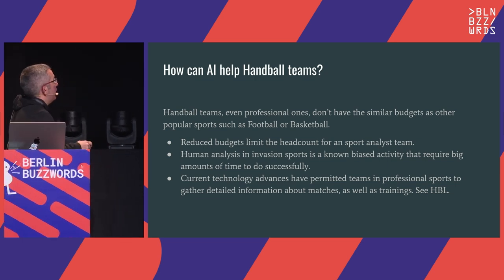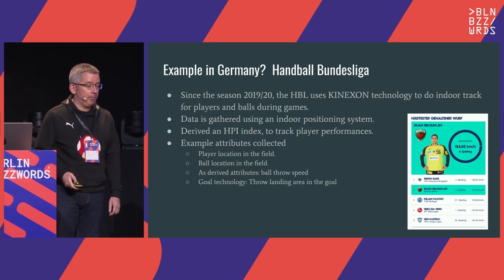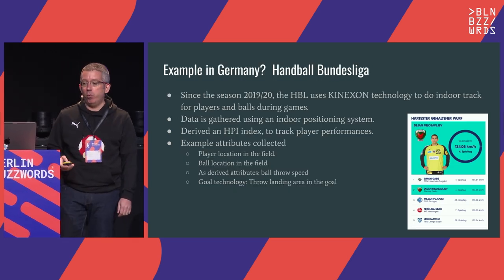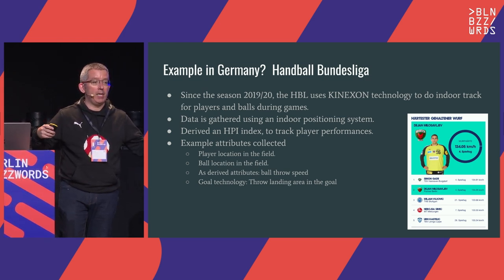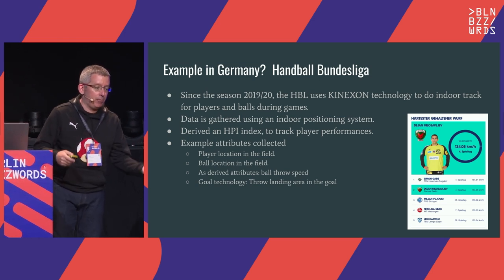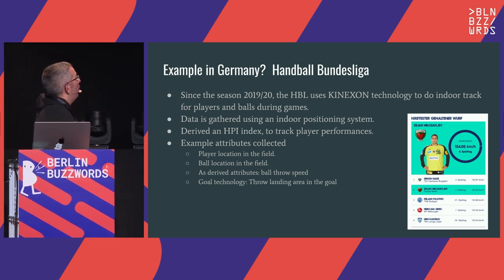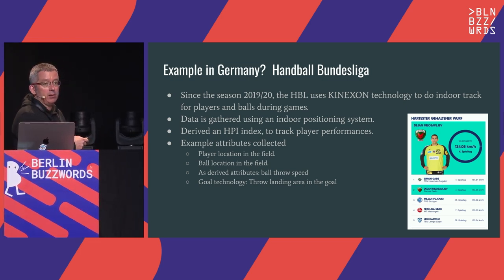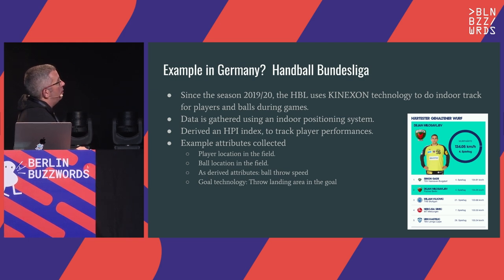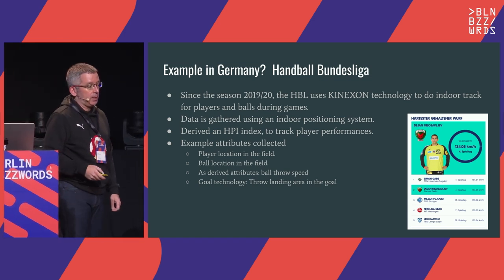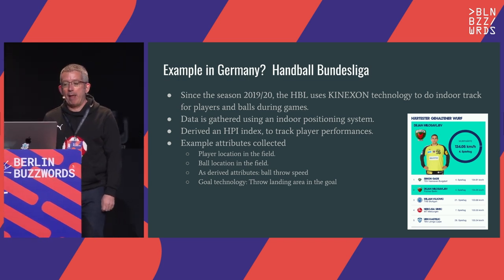What is interesting is the current technology advances. Right now, the HBL — the German Bundesliga — works with a German company called Kinexon, who is able to do indoor tracking. All games in the handball Bundesliga are tracked to the millimeter: where players are moving, where they are throwing, what the ball location is. They are presenting a lot of this data on their website — who shot the fastest, who was the best goalkeeper, what were the areas where they shoot — so there is really a lot of effort in gathering this information.